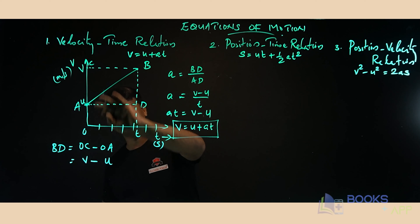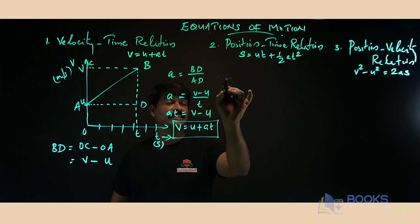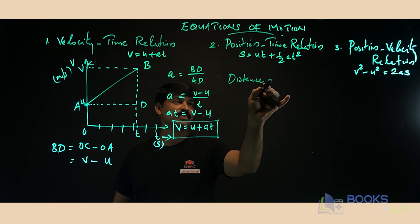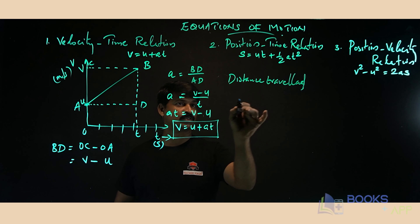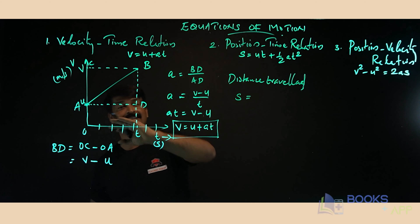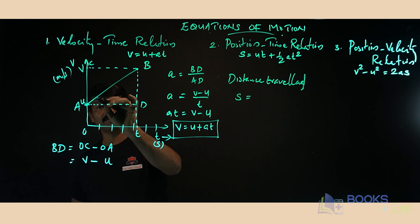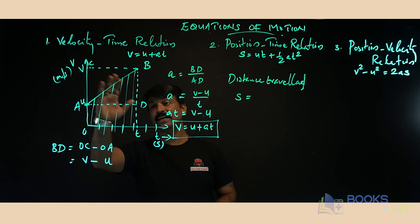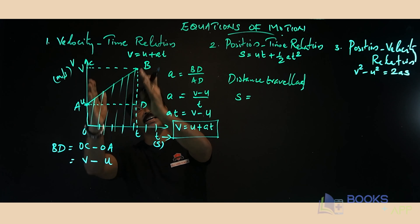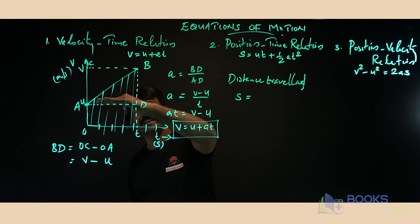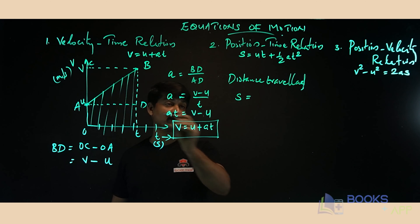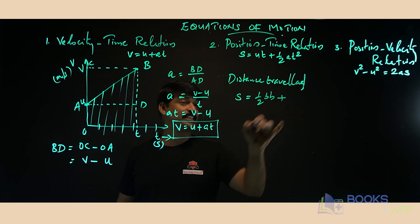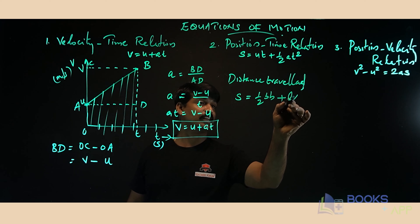Now let us derive the second equation of motion — the position-time relation — from the same graph. The area under a velocity-time graph represents the distance traveled by the object. The area under this graph can be calculated by splitting it into two pieces: one triangle and one rectangle.